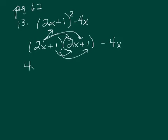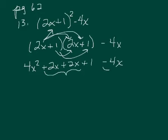So you end up getting 4x squared plus 2x plus another 2x plus 1 and then you have that minus 4x. When you combine like terms, you got positive 4x there, you got negative 4x there, and they cancel. So you're left with 4x squared plus 1. That's all you have left. That's your function actually to begin with.